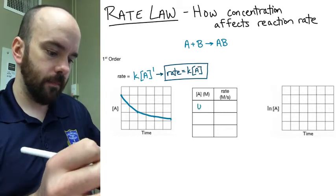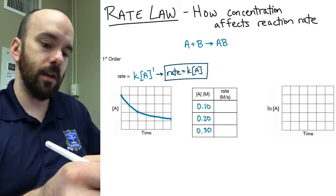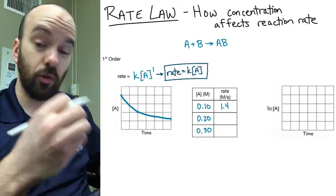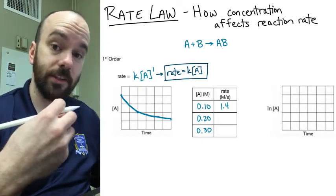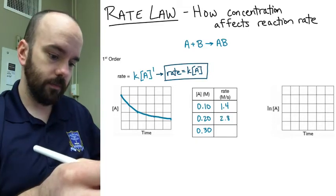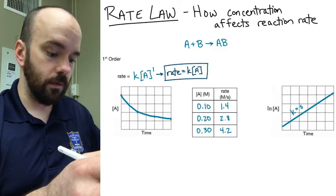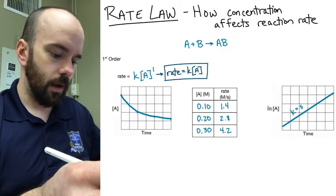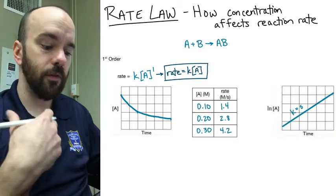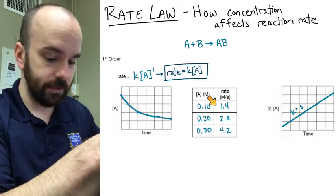Let's look at a data table with concentrations of 0.1, 0.2, and 0.3 molar. Let's say the rate at 0.1 molar is 1.4 molar per second. If we had twice the concentration — 0.2 molar — the reaction would be twice as fast, so the rate would be about 2.8 molar per second. At 0.3 molar, following that linear trend, the rate would be 4.2 molar per second. The more concentration you have, the faster the reaction, and it's a linear relationship: twice the concentration gives twice the rate.